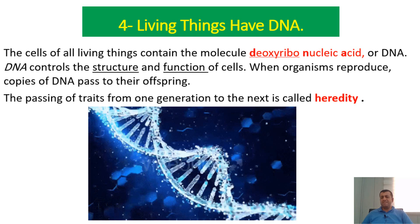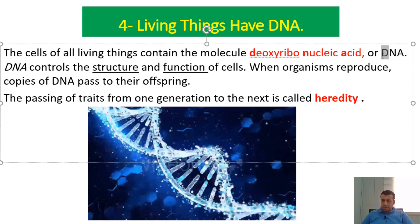The fourth characteristic: living things have DNA. The cells of all living things contain a molecule called DNA. The long form of DNA is deoxyribonucleic acid. DNA controls the structure and function of the cell. DNA, also called genetic material or chromosome, is found in the nucleus of the cell, and its function is to control cell activities.